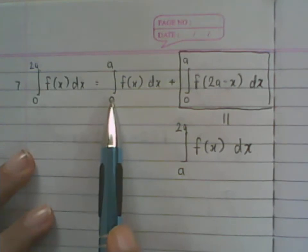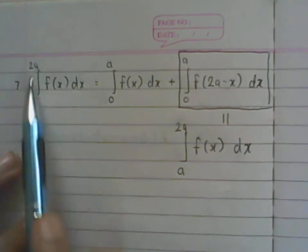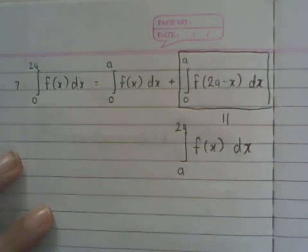So we can have the definite integral from 0 to 2a directly of f(x)dx, which is what we have on the left-hand side. Once we prove this equality, we have actually proven the property.